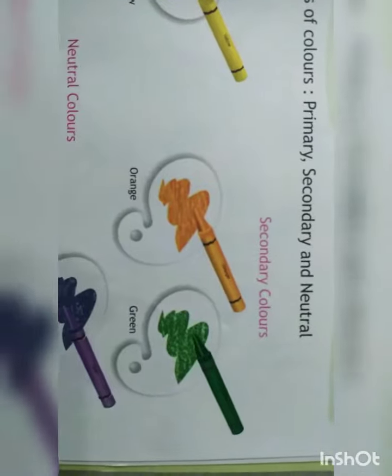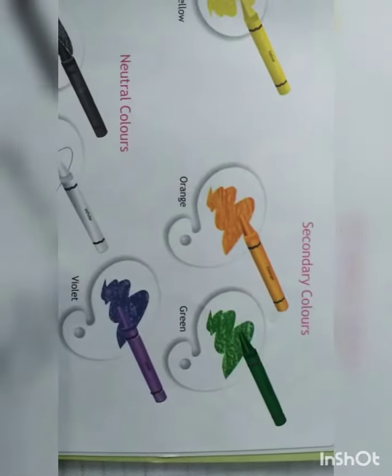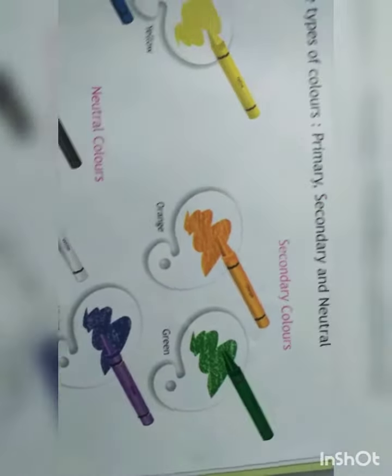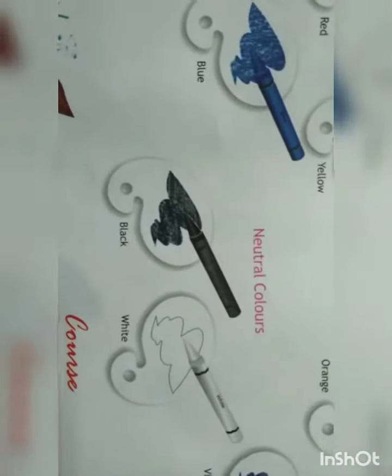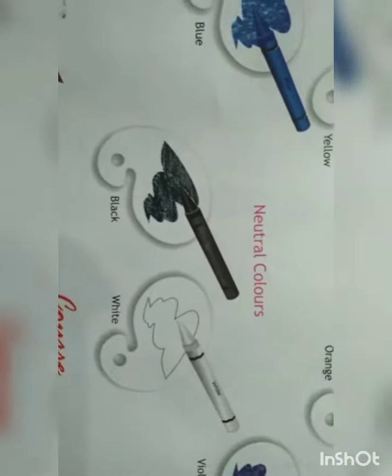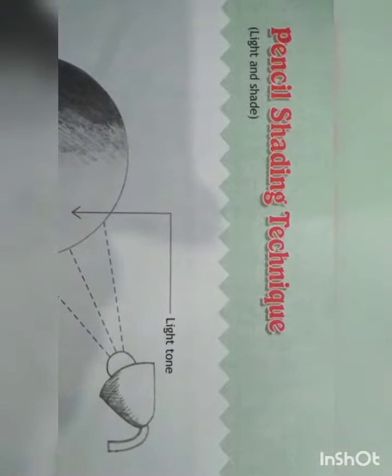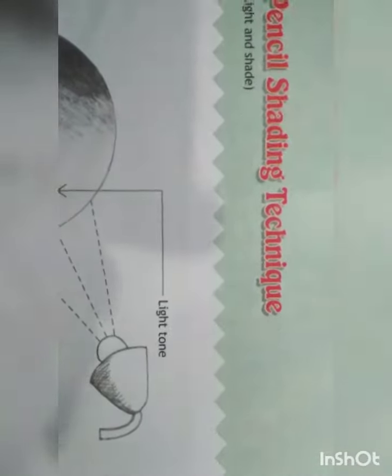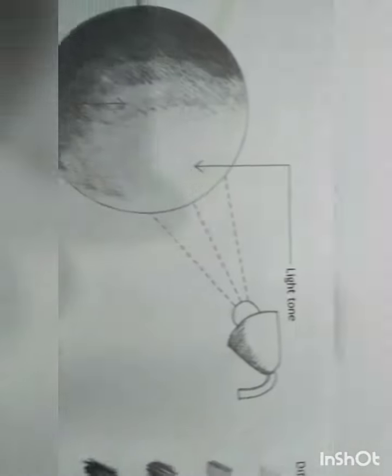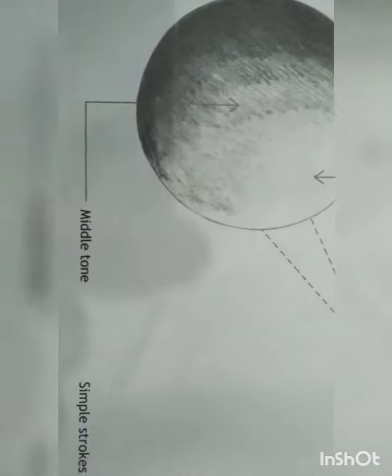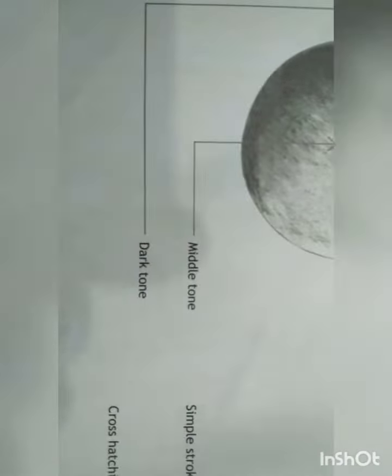Secondary colors: Orange, Green, and Violet. Neutral colors: Black and White. Pencil shading technique includes light and shade: light tone, middle tone, and dark tone.